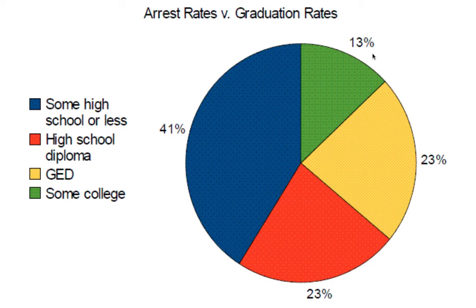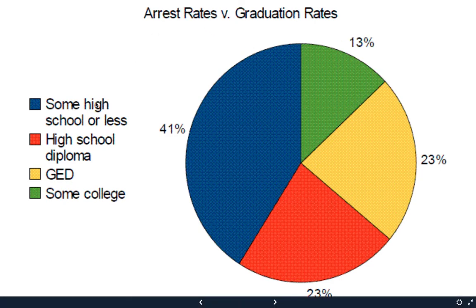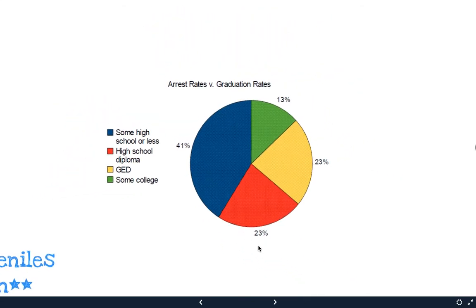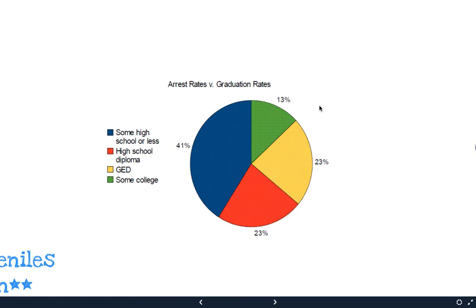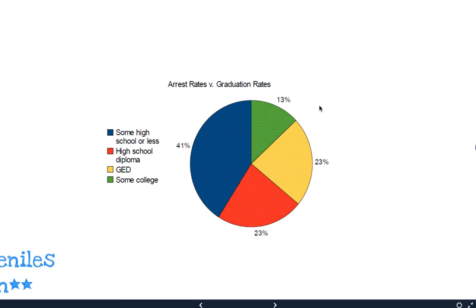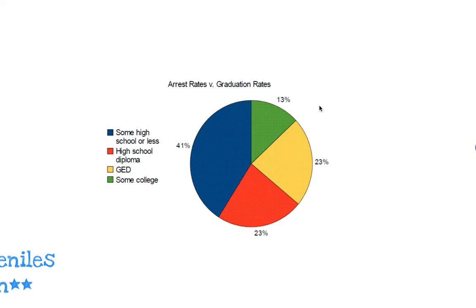Here is the arrest rate versus graduation rate data. If you drop out of high school, you have a 41% chance of being arrested. If you only have a high school diploma or GED, you have a 23% chance. If you go to college, it's 13% — meaning you have an 87% chance of not being arrested. And if you graduate from college, it drops even more significantly.